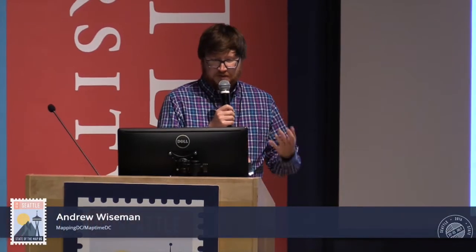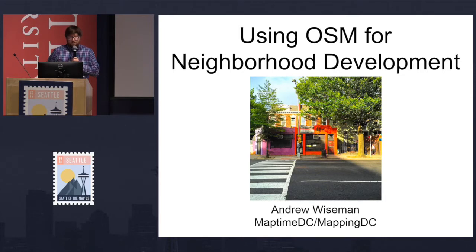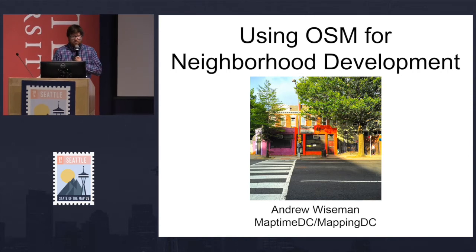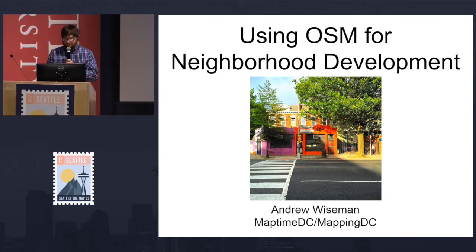I'm Andrew Wiseman with MapTime DC, which is a local chapter of a global non-profit organization that teaches people mapping and geography. I'm also with Mapping DC, which is the local OpenStreetMap community in DC. We're going to talk about a project we did — me and a couple of friends and colleagues in our neighborhood in Washington DC — and how to use OSM for neighborhood development and neighborhood projects.